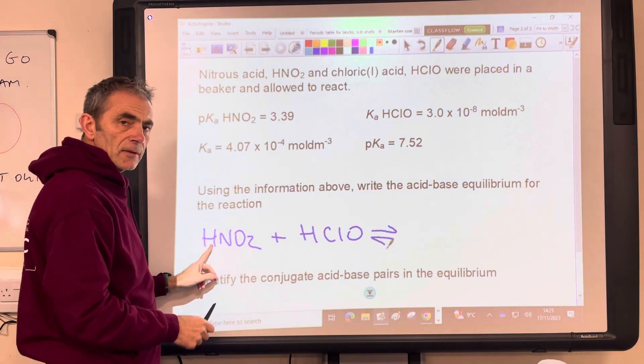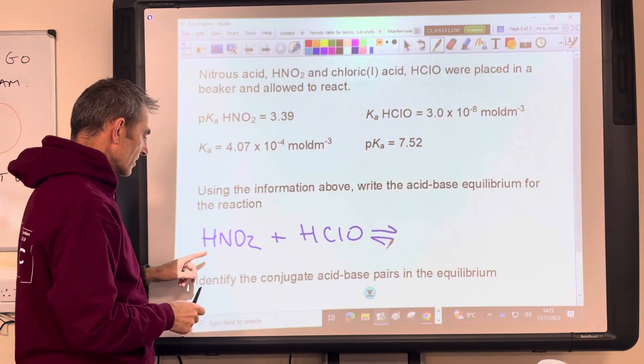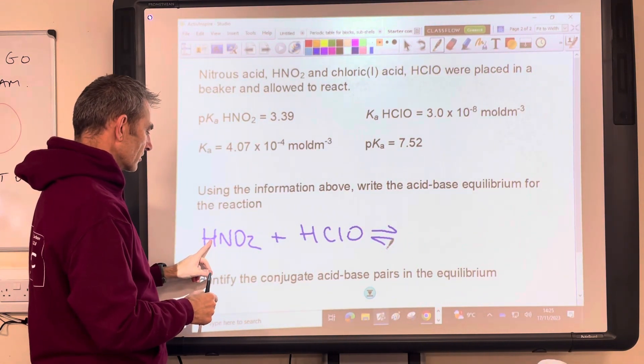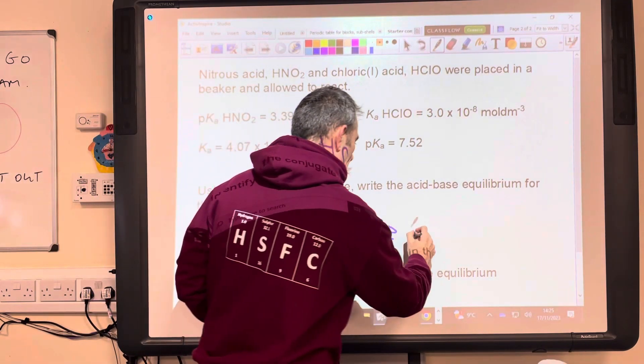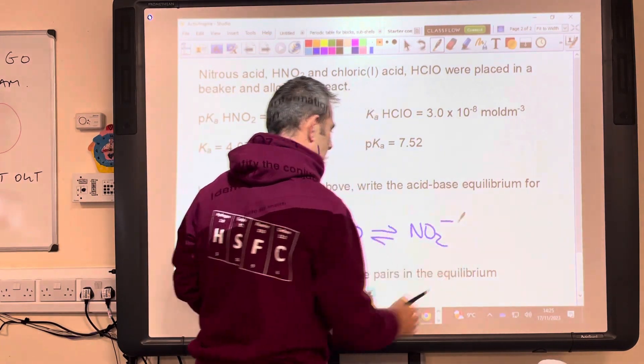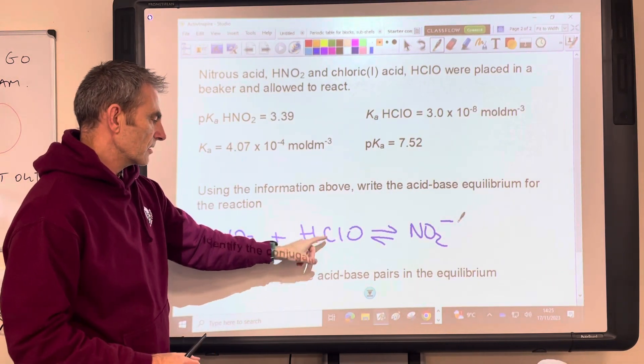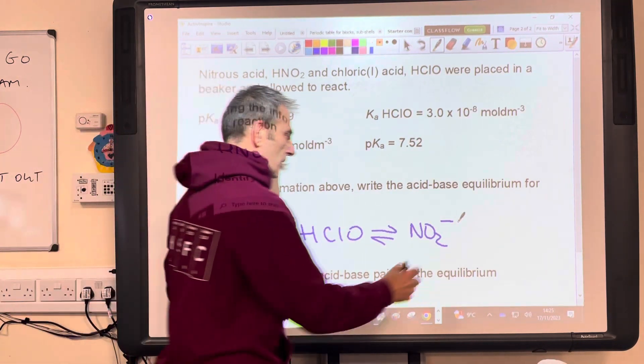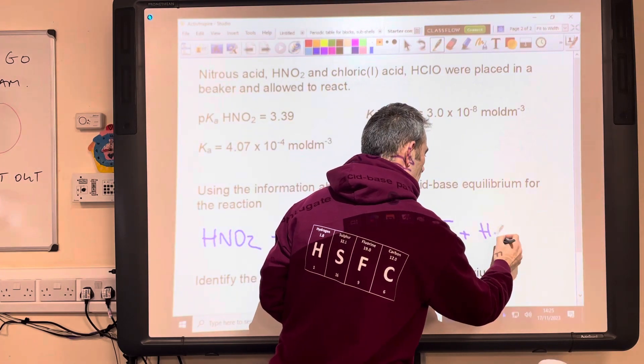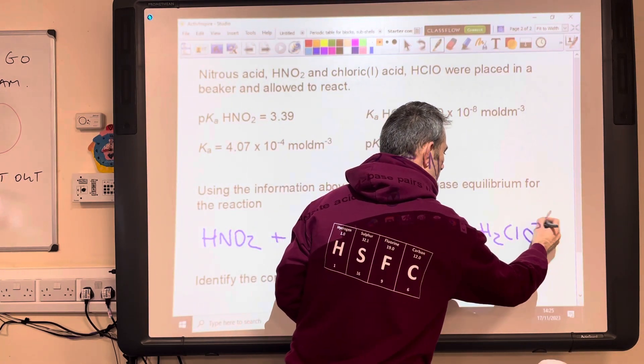So that's going to donate the proton. It's the stronger of the two acids, so it's a proton donor in this reaction. So that's going to become the NO2 minus ion. And the proton is going to be accepted by that, so that's acting as a base there, so that will become H2ClO+.